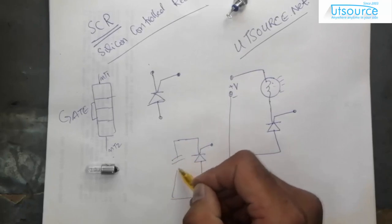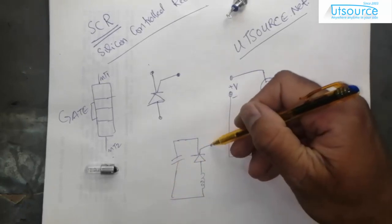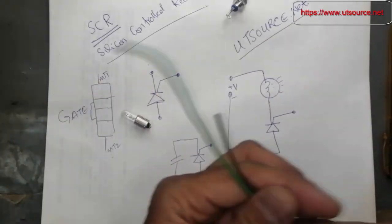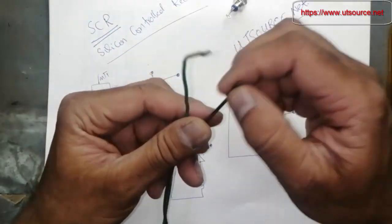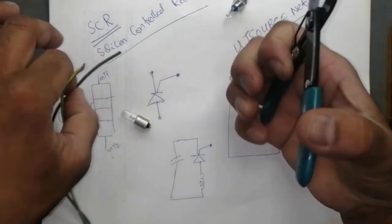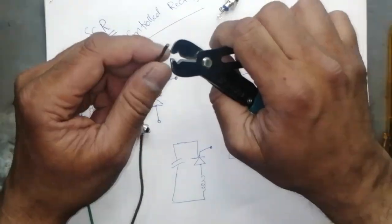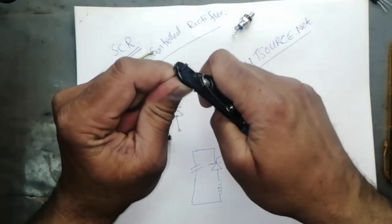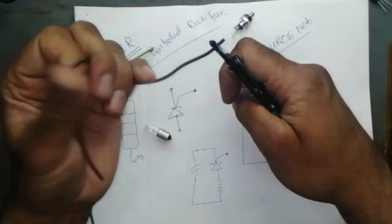Here you will connect battery and we will give a gate signal and then we will see the response. I will take two wires using a wire stripper. Friends, always use a proper tool because usage of proper tool makes our life very easy.